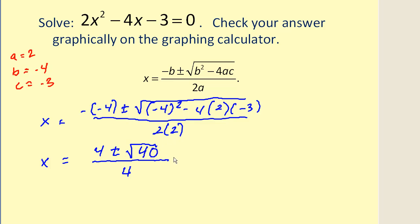We need to simplify this square root. Now, remember 40, I could write 40 as four times 10, and the square root of four would be two. So this would become four plus two square root 10 divided by four.